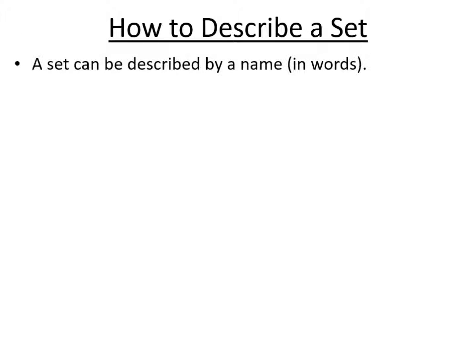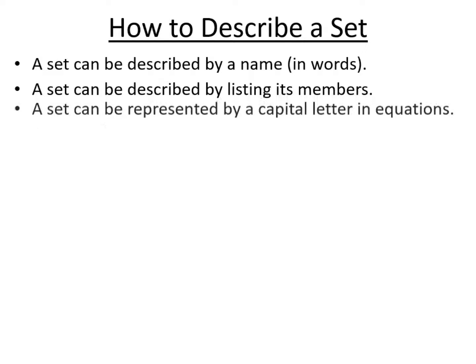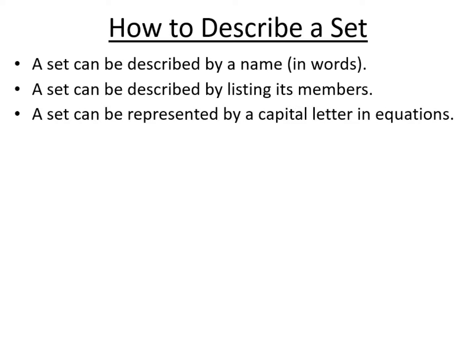So, how do we describe a set? There are three ways to describe a set. We can simply describe it in words, if we wish. We can describe it by listing its members. And we can represent it by a capital letter, if we're going to write some equations using the sets.